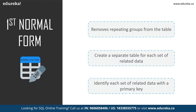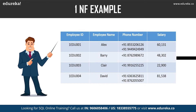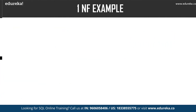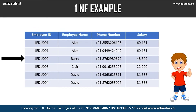If a table contains composite or multi-valued attributes, it violates the first normal form. First normal form removes repeating groups from the table, creates a separate table for each set of related data, and identifies each set with a primary key. In the employee table example, the phone number column has two values, violating 1NF. After applying first normal form, each row is distinct and no cell has multiple values — atomicity is achieved.